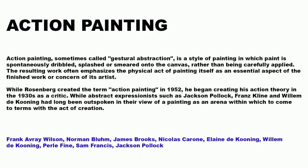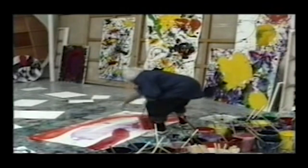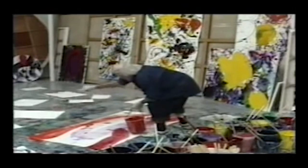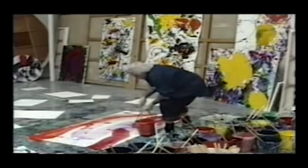Action painting, sometimes called gestural abstraction, is a style of painting in which paint is spontaneously dribbled, splashed, or smeared onto the canvas rather than being carefully applied. The resulting work often emphasizes the physical act of painting itself as an essential aspect of the finished work. While Harold Rosenberg created the term action painting in 1952, he began developing his action theory in the 1920s as a critic. Abstract Expressionists such as Jackson Pollock, Franz Kline, and Willem de Kooning had long been outspoken in their view of painting as an arena for coming to terms with the act of creation.